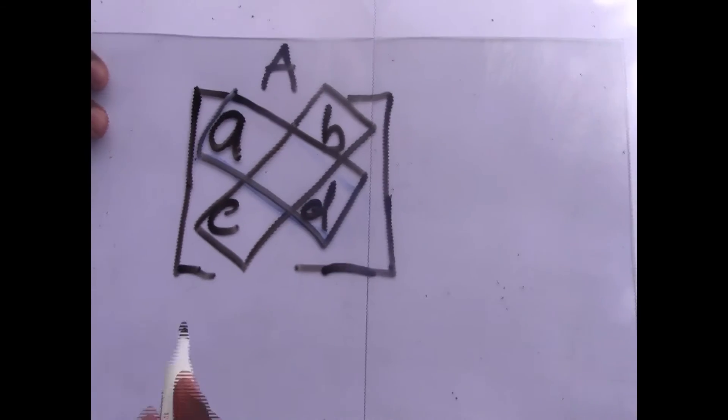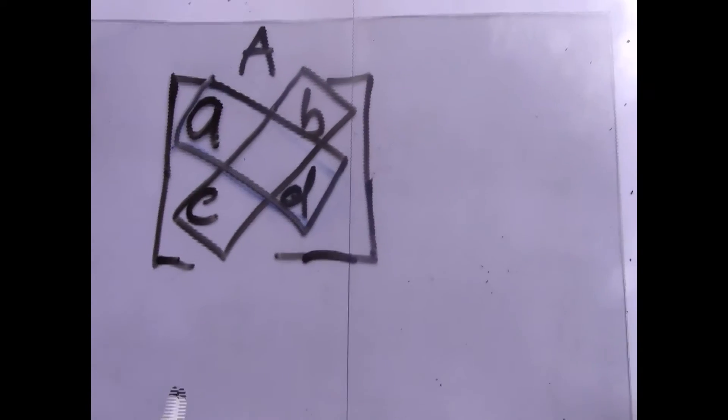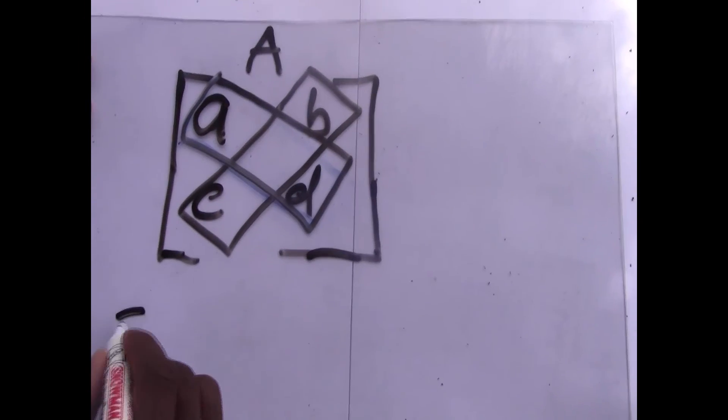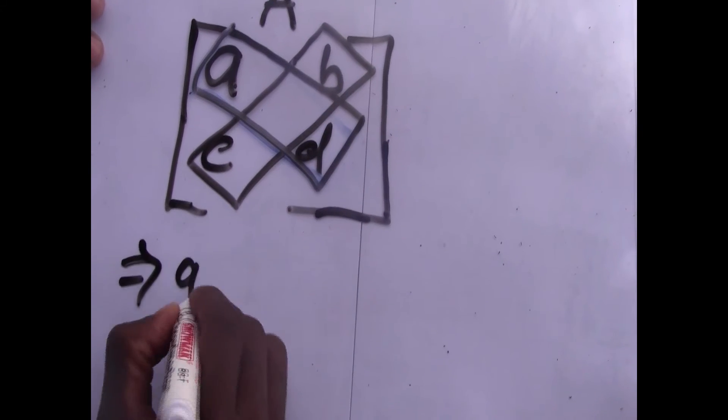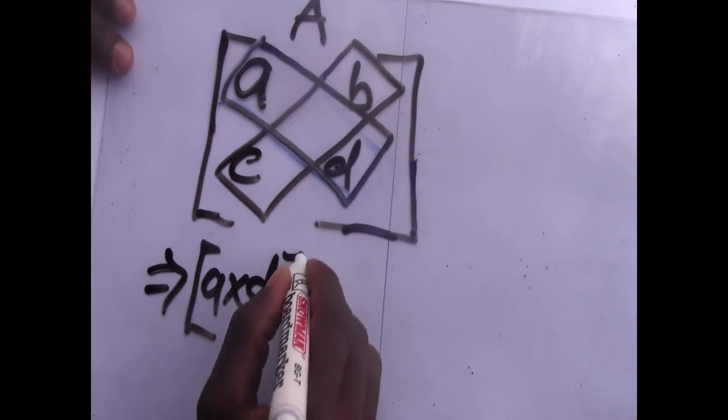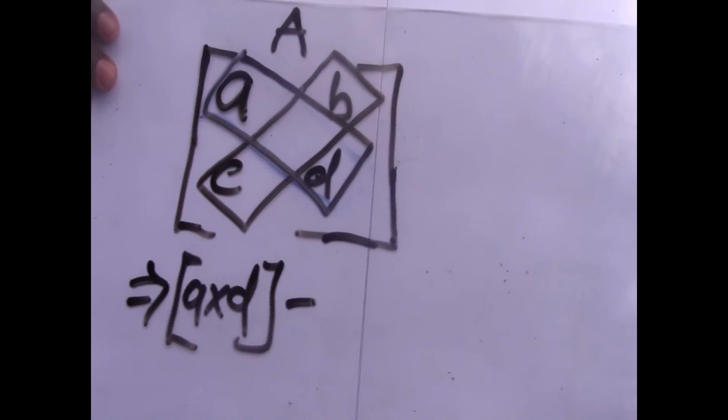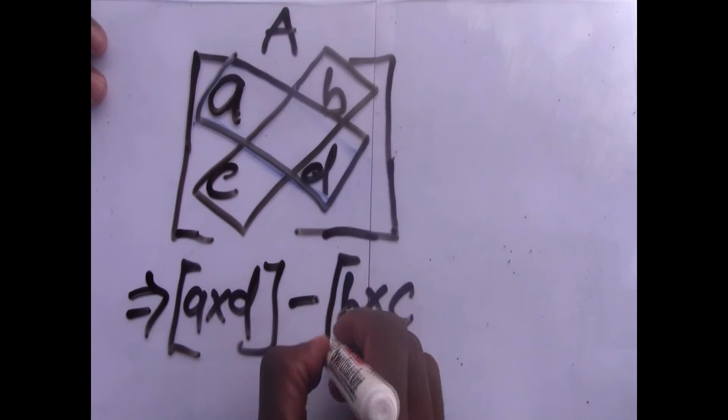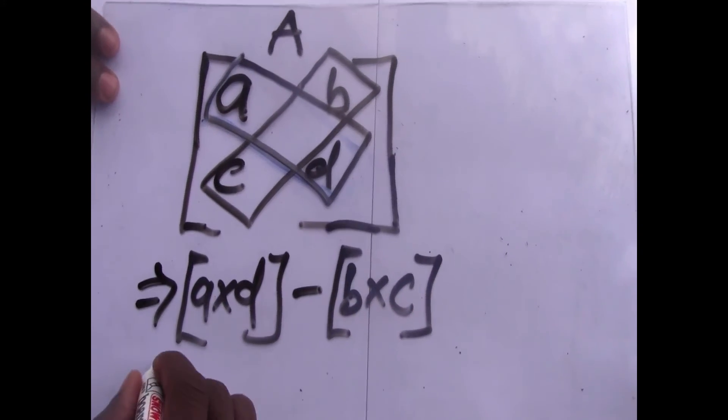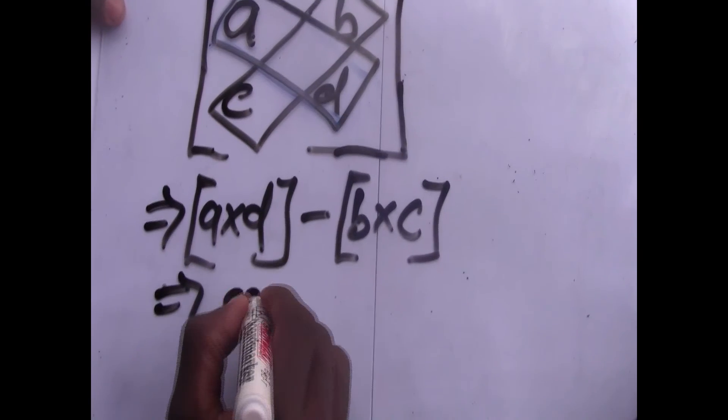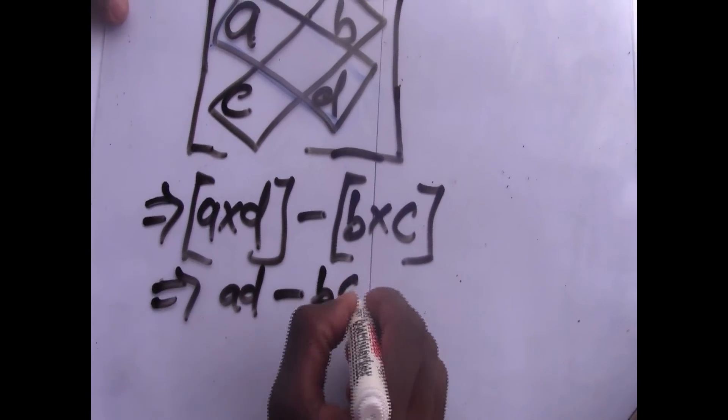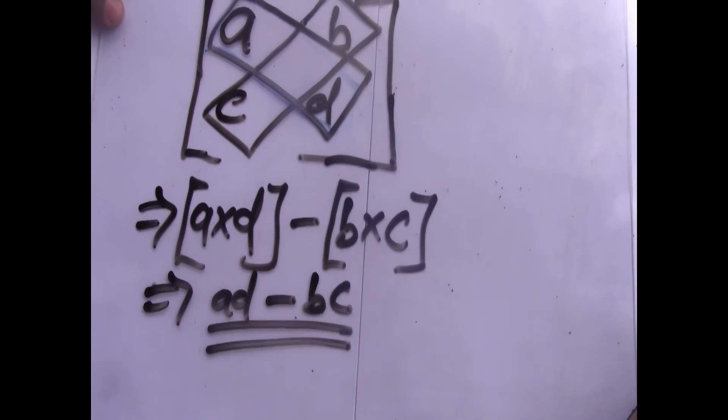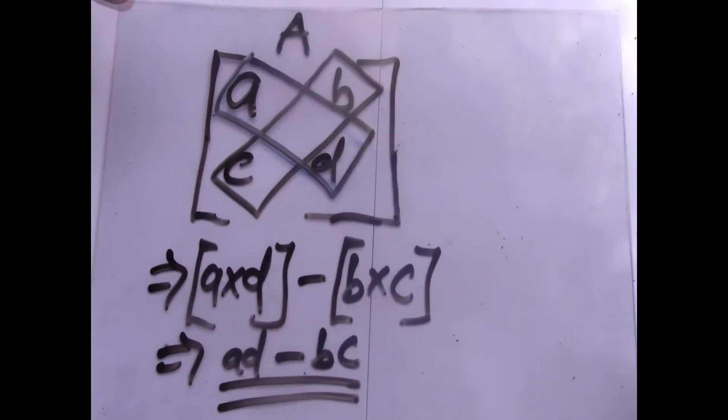So for you to get a determinant of a matrix, what you're going to do, you're going to multiply the leading diagonal A times D. Your answer you subtract by the secondary diagonal, which is B times C. So for our case here, it will be AD minus BC. This is our determinant of this matrix.